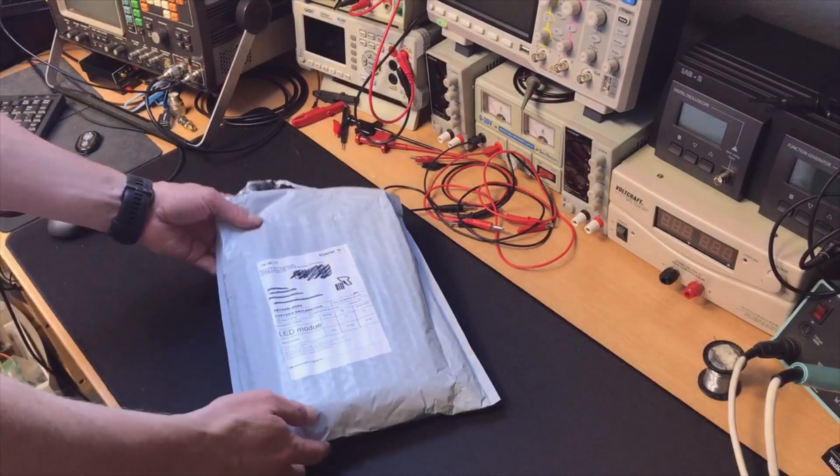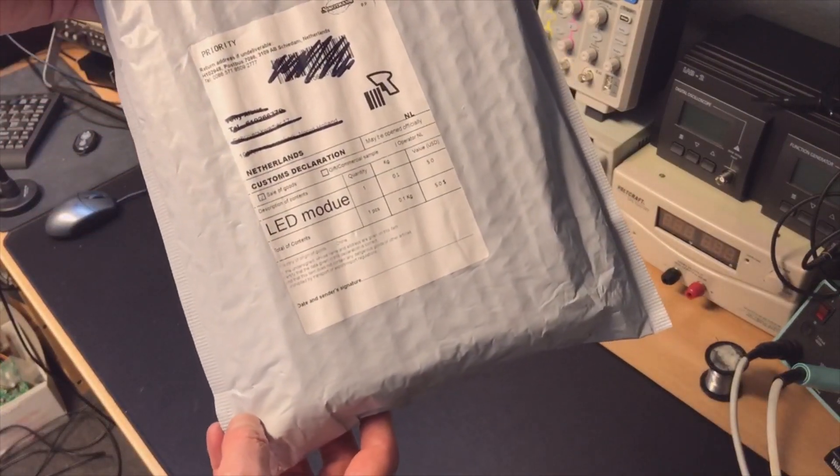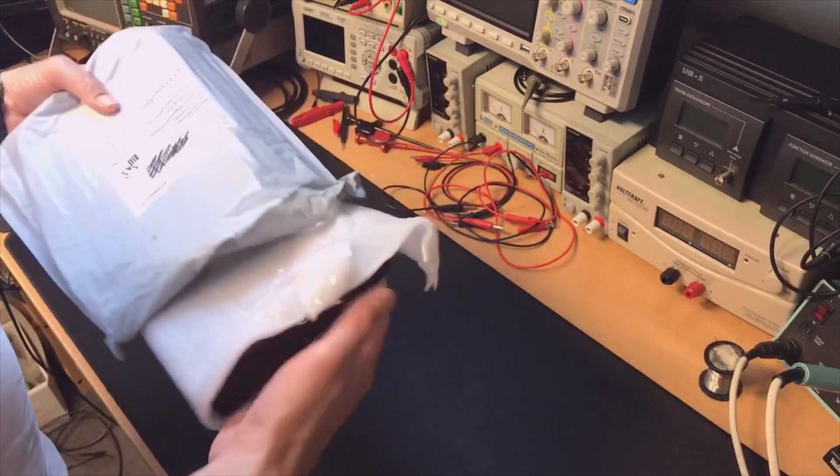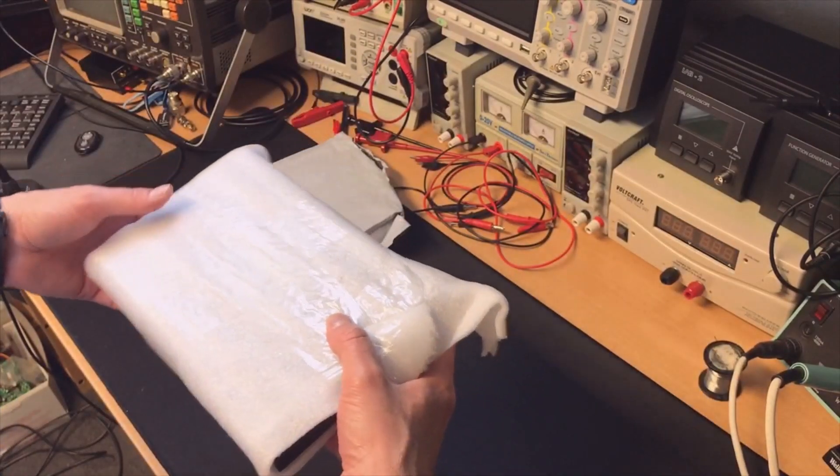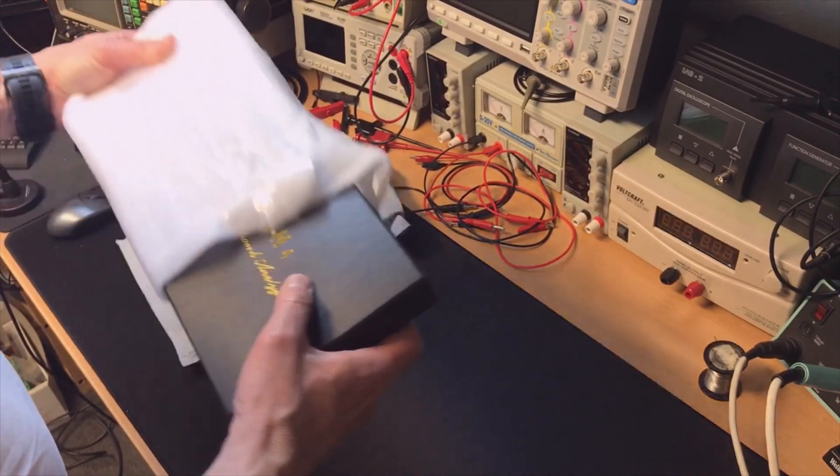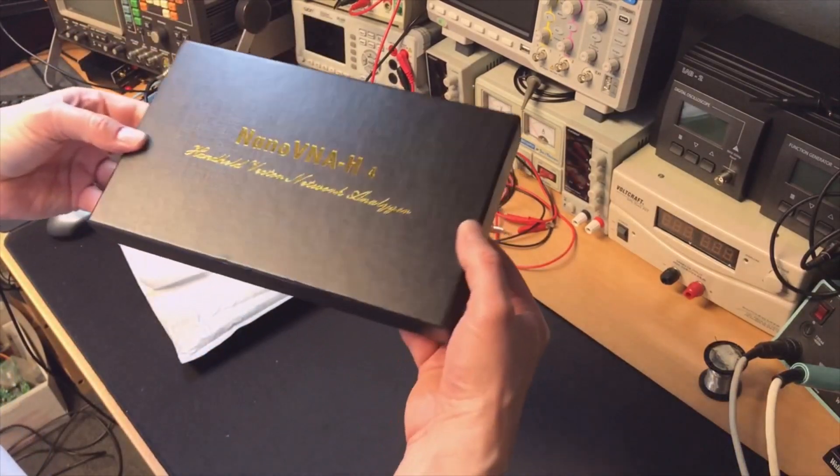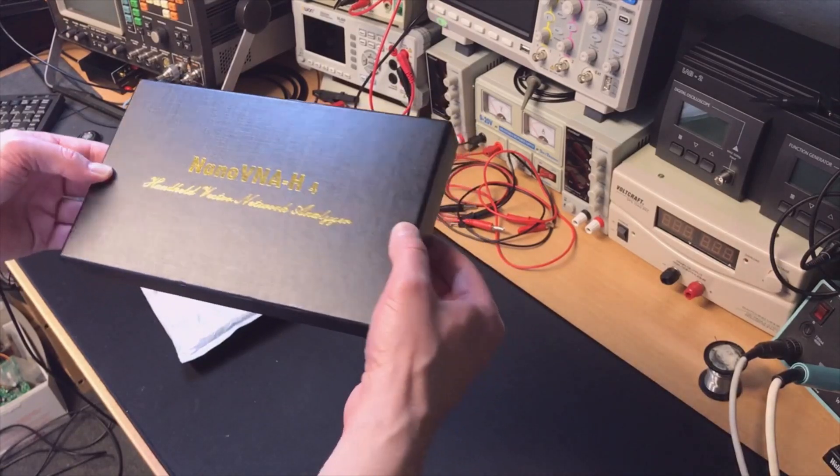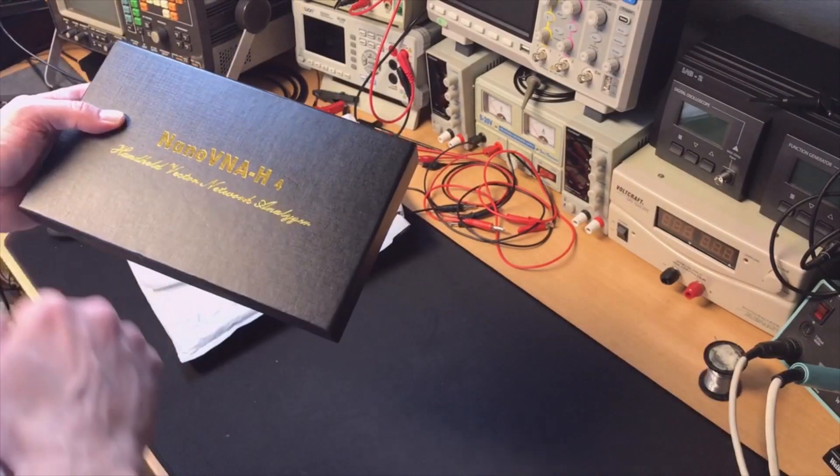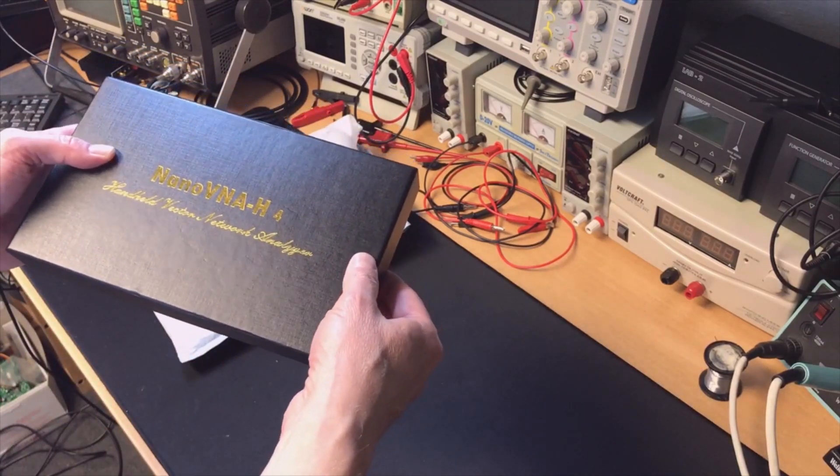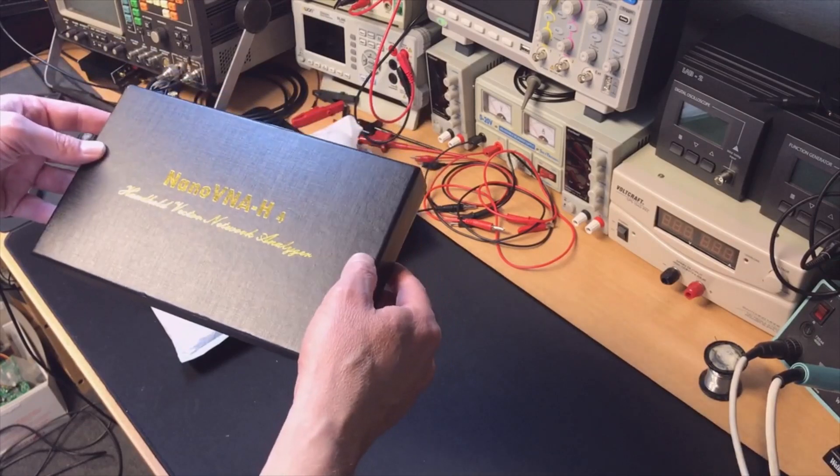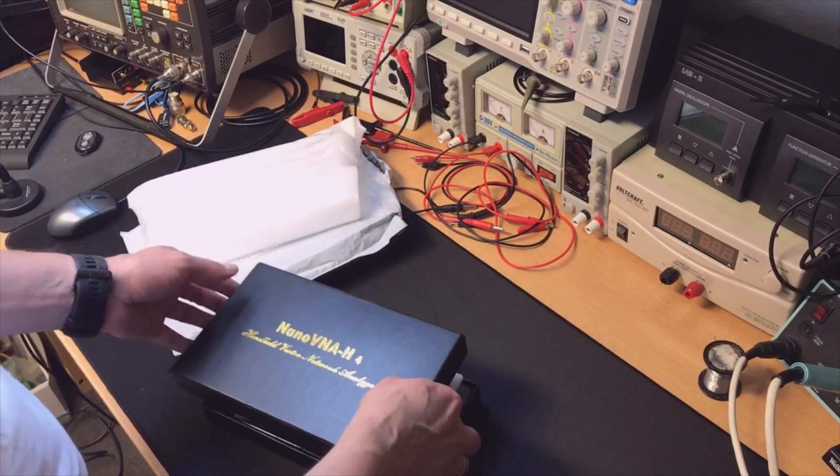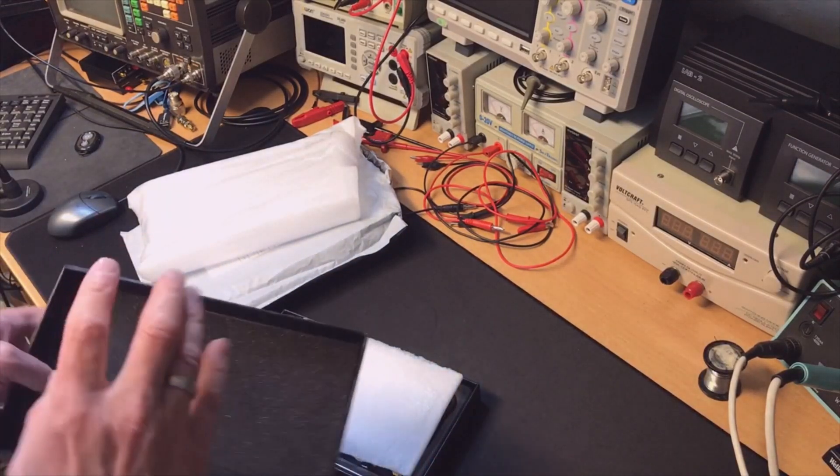Here we have the package. It came nicely packed, sent as a LED module, which will save me some imports and extra wrapping. Very nice. Here it is - talking about detail, this looks very nice. It's the H4, which means the H is the casing and the 4 is because this is a 4 inch screen, not 2.4, so the screen is a lot bigger.